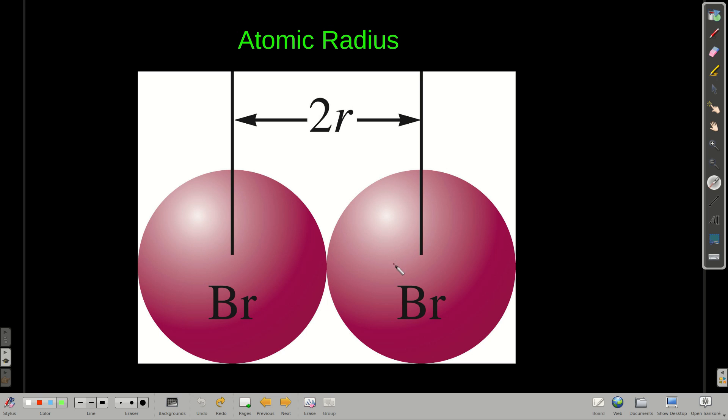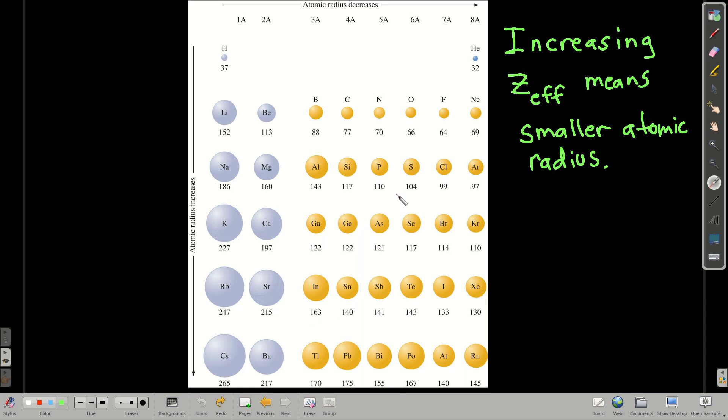If it doesn't happen to form a diatomic like this, we can get around this by looking at different bond lengths, differences between the centers of the nuclei in different covalent compounds that it forms. We get the same idea. If it's a metal, then we just look at the distance between the nuclei in the metal and take half of that, but that's what atomic radius is.